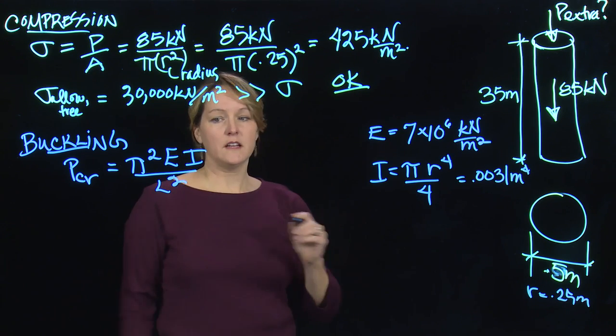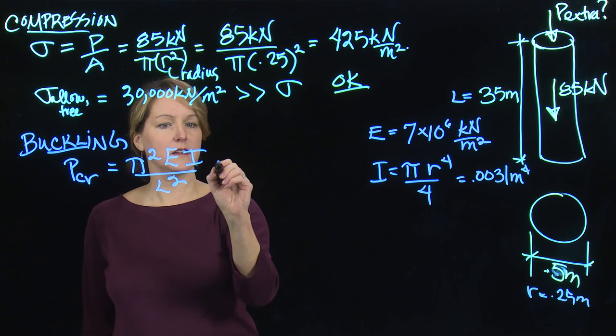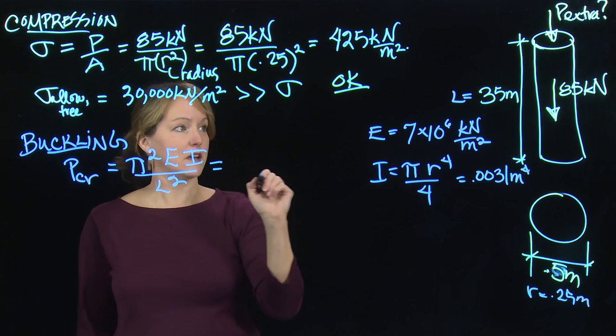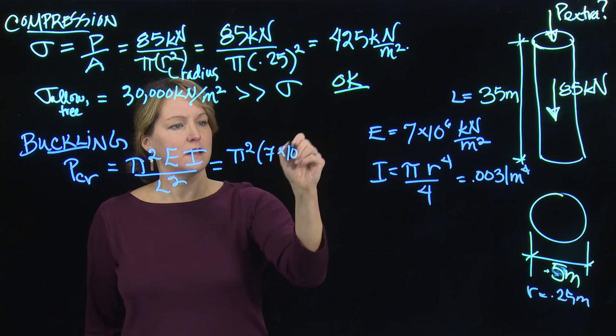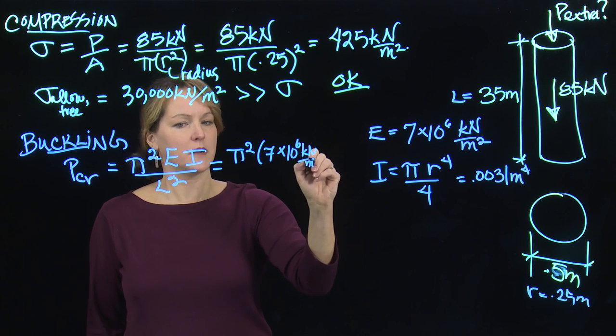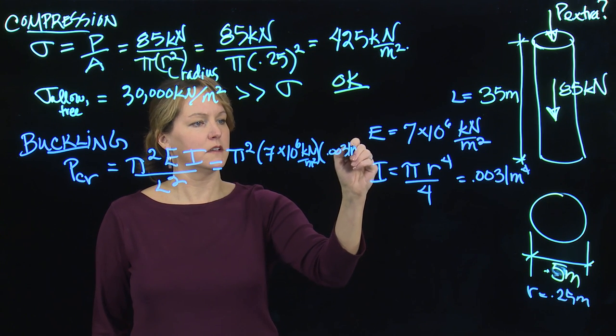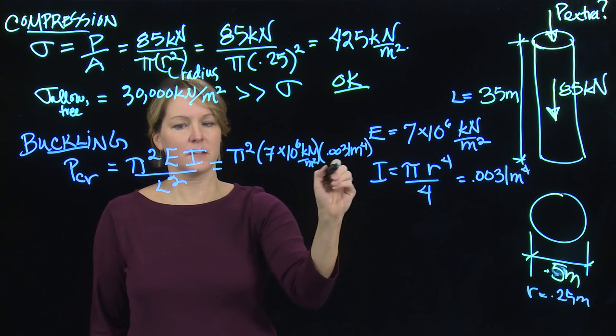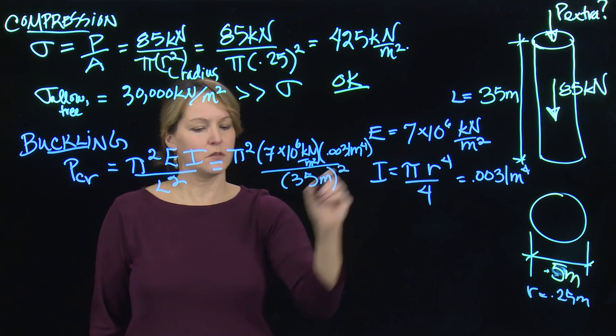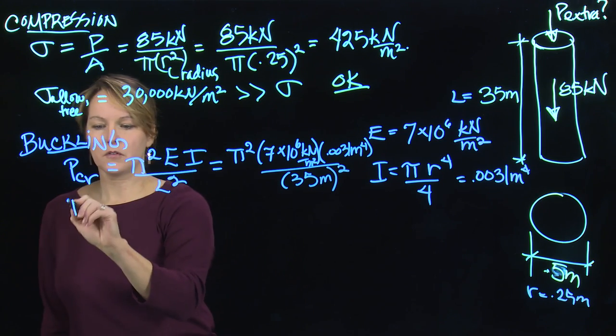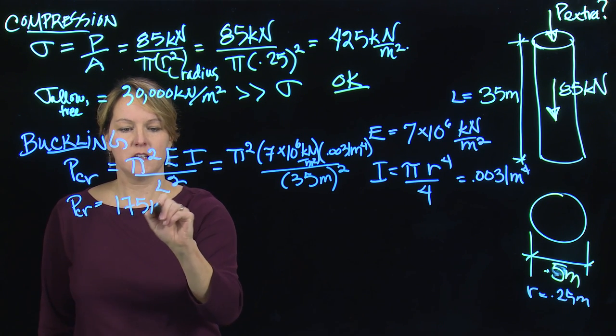Now I have the values I need. L is this 35 meters. If I want to calculate the critical buckling load for this column, which is the owl's tree, it's pi squared times 7 times 10 to the 6th kilonewtons per meter squared times the moment of inertia, 0.0031 meters to the 4th, and divide that by L squared. It's a tall column, 35 meters squared. I get that the critical buckling load for this tree is 175 kilonewtons.